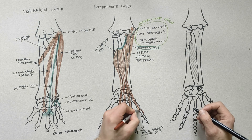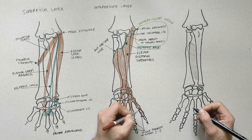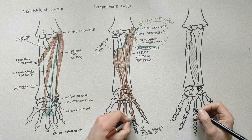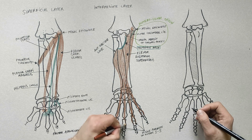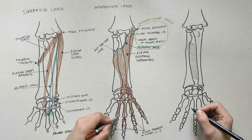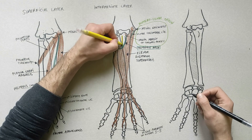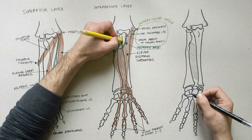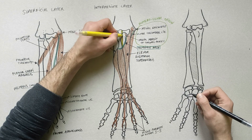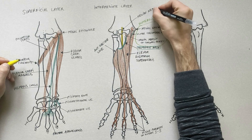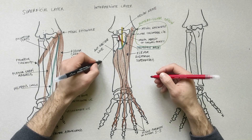The flexor digitorum superficialis inserts by way of four tendons into the middle phalanges of the last four fingers. Before insertion, each of the four tendons splits into medial and lateral slips, which are inserted into the corresponding sides of the middle phalanx. An important mention is that below the tendinous arch of flexor digitorum superficialis pass the median nerve and the ulnar artery.